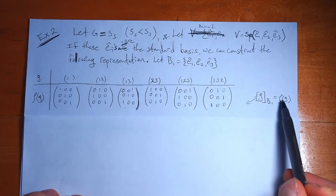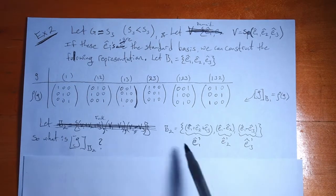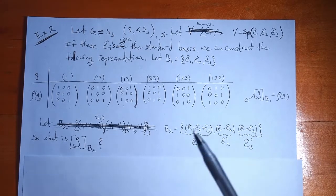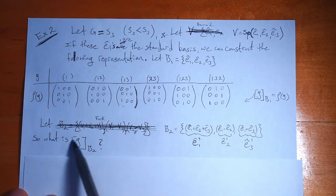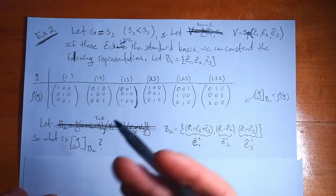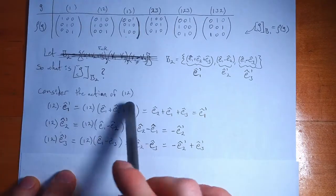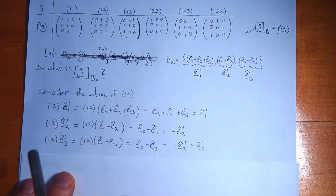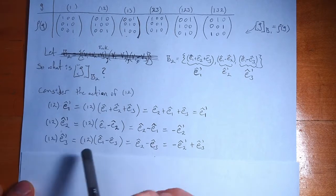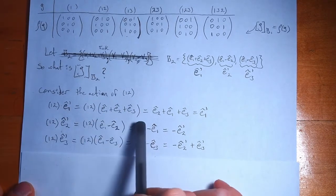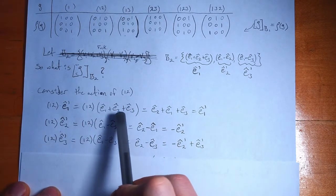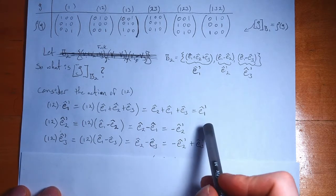But what if we pick a new basis? Our second basis vectors are: e_1' = e_1 + e_2 + e_3, e_2' = e_1 − e_2, and e_3' = e_1 − e_3. These are linearly independent and span all of V. To find the representation in the second basis, as an example I compute how (1,2) acts on e_1'. Writing e_1' in the first basis, applying (1,2) — 1 gets sent to 2, 2 gets sent to 1 — we get e_2 + e_1 + e_3, which is just e_1' again. So the action of (1,2) on e_1' is the identity on e_1'.